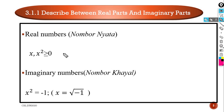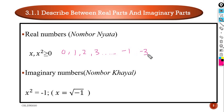A real part is a real number — we call it 'nombor nyata' — where x or x² is greater than or equal to 0. For example, real numbers are 0, 1, 2, 3, negative 1, negative 3, and so on. For imaginary numbers, it's where x² equals negative 1, or x equals √(−1).